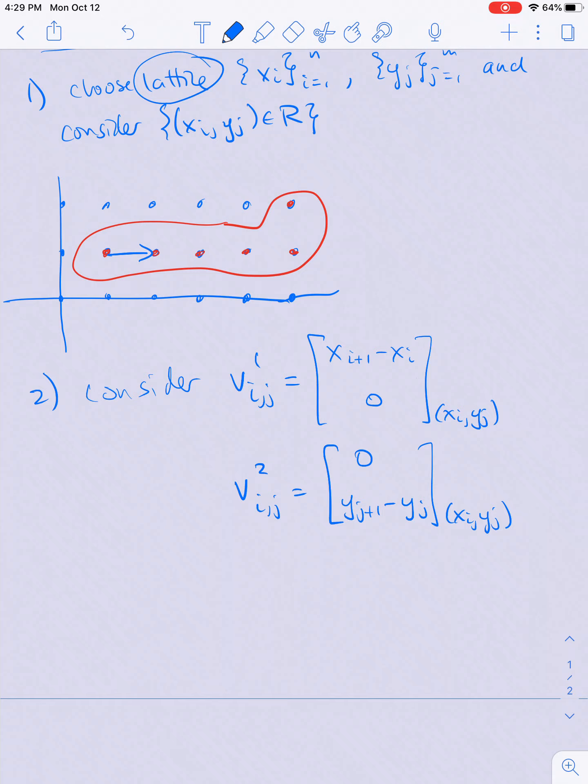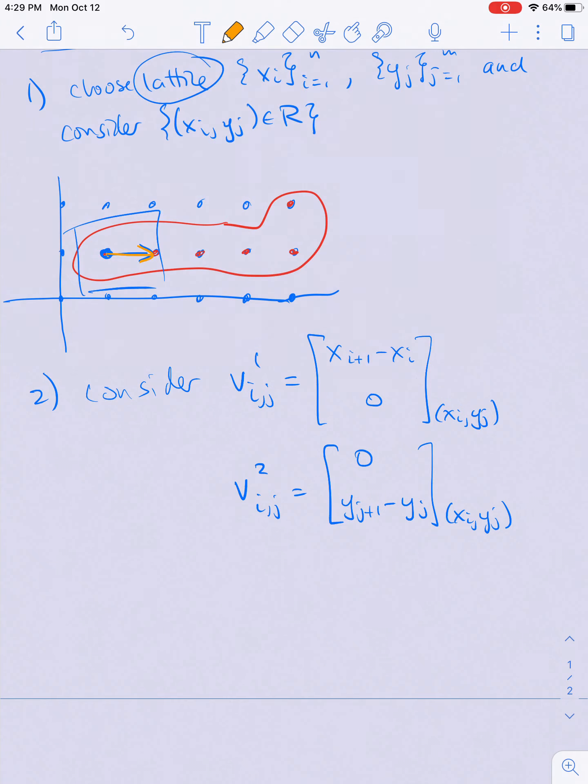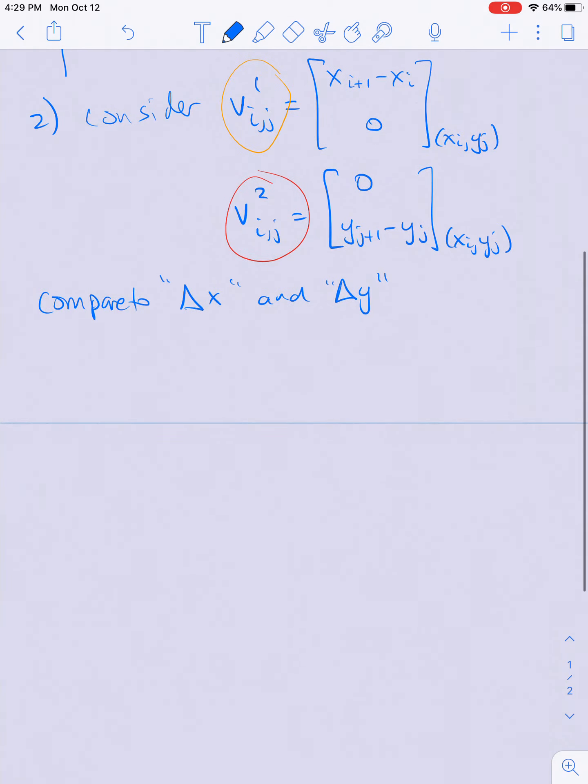Here, at this point, the vector in the tangent space pointing right, whose length is the difference in x values, is v₁, and the one pointing up is v₂. These are just the names of those vectors, and this should look familiar. You should compare to the change in x (Δx) and change in y (Δy) that you might have seen when learning about integrals in a calculus class.